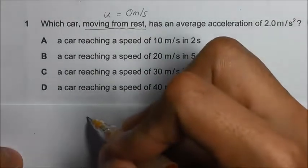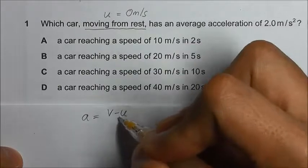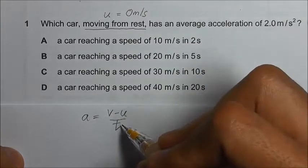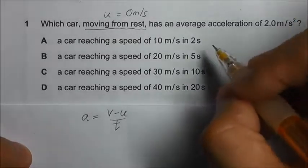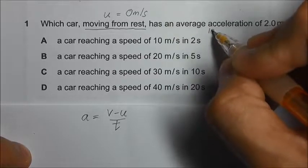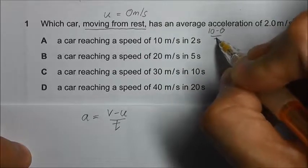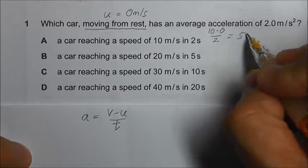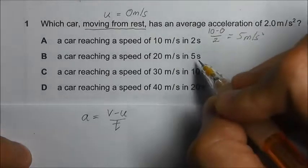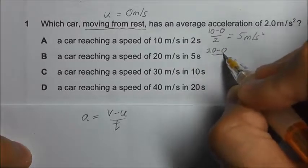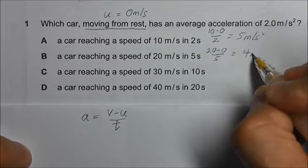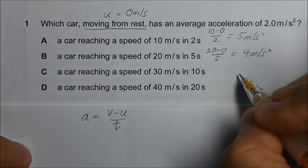acceleration is equal to v minus u divided by t, final speed minus initial speed divided by the time taken. For option A, it will be 10 minus 0 divided by 2, that will give us 5 meter per second square. Option B, 20 minus 0 divided by 5, we will get 4 meter per second square.